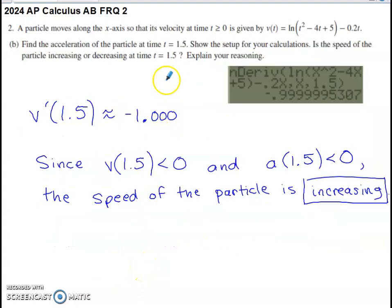Part B asks us to find the acceleration at time 1.5, show the setup for your calculation. Is the speed of the particle increasing or decreasing at time 1.5? Explain your reasoning.